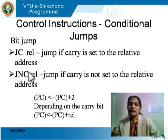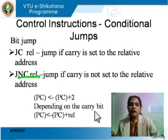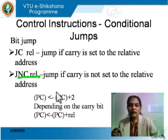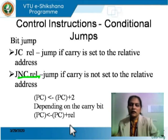Analogous to an if statement: if C equals 0, the JNC condition is true; if C is not 0, the JC condition is true. When these instructions execute, the program counter is incremented by 2, then depending on the carry bit, the effective address is computed as current PC plus the relative address, which becomes the address to which control is transferred.